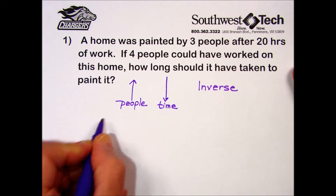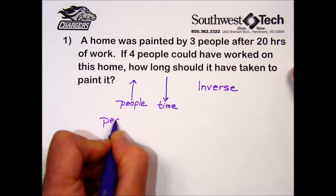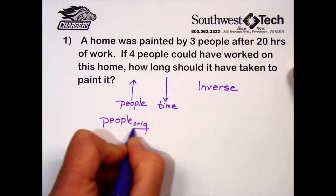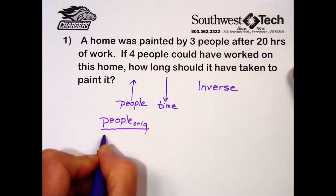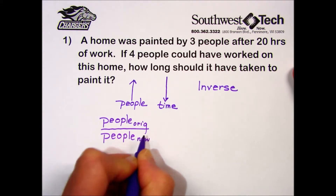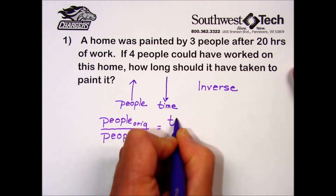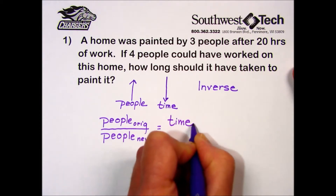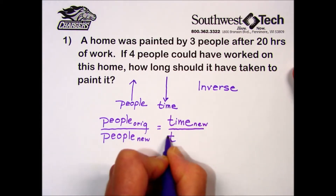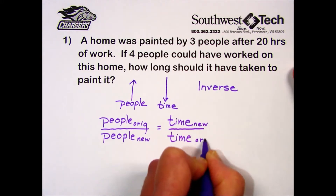To solve this problem, we'll set up the ratio of the original number of people over the new number of people, equal to the time. On our time ratio, we're going to put the new time over the original time.